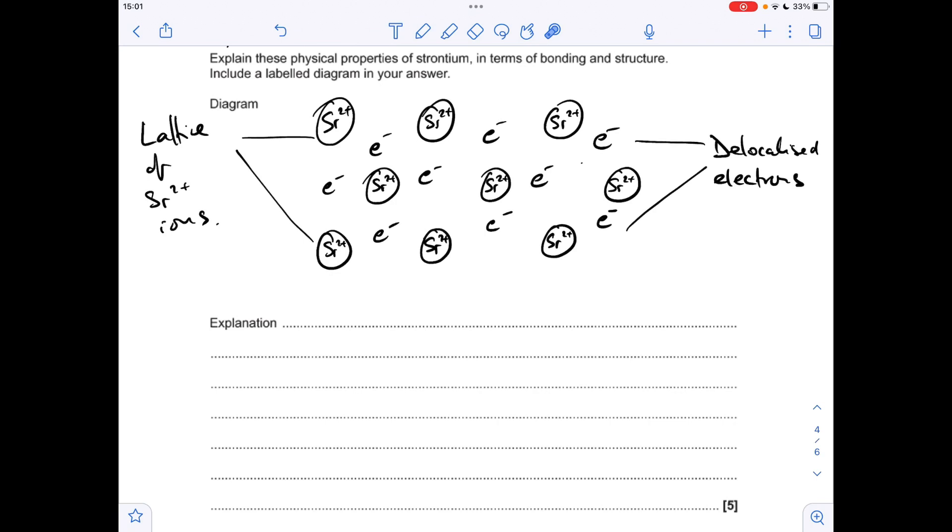So moving on to the last question. So obviously the diagram we need is the metallic bonding diagram. Strontium's in group 2, so we need a lattice of SR2 plus ions. So I always draw three rows of 3, and I offset the middle row. You don't have to do that. You could just put them all underneath each other if you want, but that's how I do it. And obviously we need some delocalised electrons dotted around in the spaces.